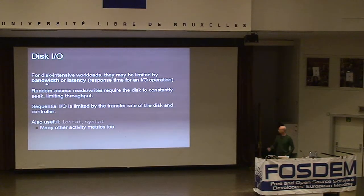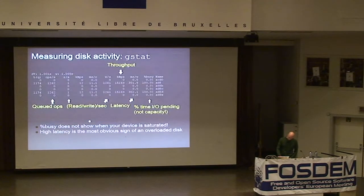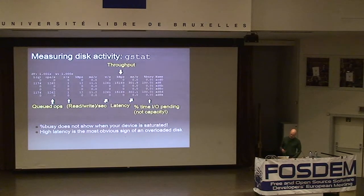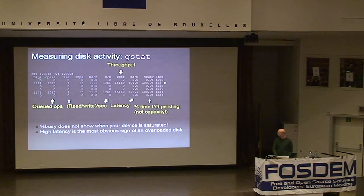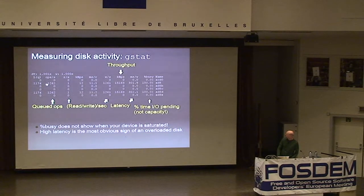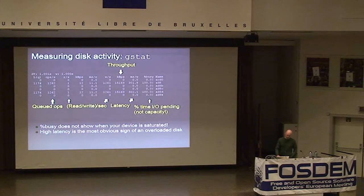There are useful tools for studying I/O operations. I've mentioned iostat and systat, which have a lot of other metrics as well. One very useful command in FreeBSD is gstat, which is part of the GEOM storage layer. It shows you for every GEOM storage provider the operations that are currently pending. Sampling once per second, it shows us for each storage provider — in this configuration, ada6 is a SATA disk — the various partitions and a CD-ROM drive that isn't doing anything.